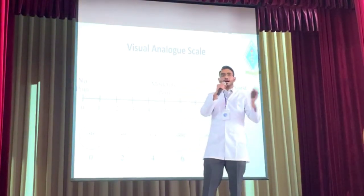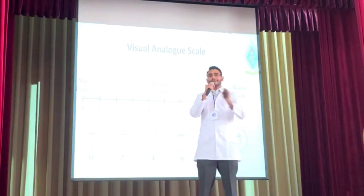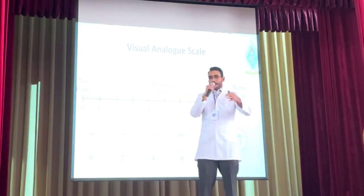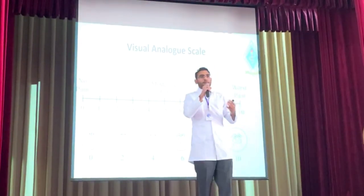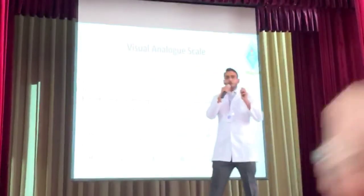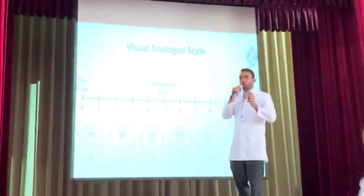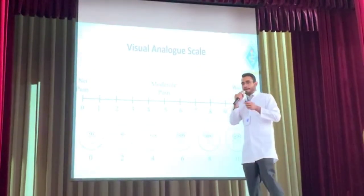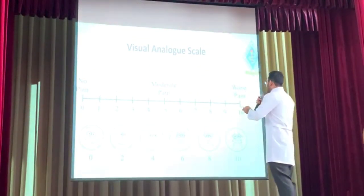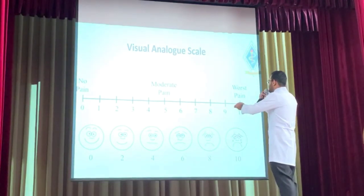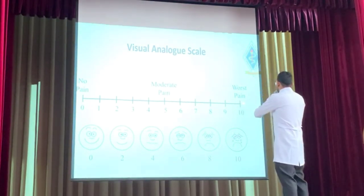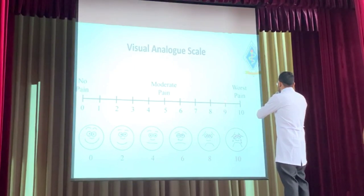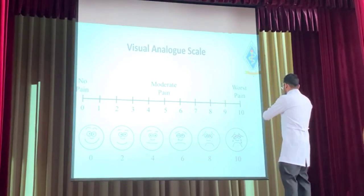Pain is a symptom — we cannot directly observe it. We use the visual analog scale to assess pain. On the visual analog scale, one end represents no pain and the other end represents severe pain. Our patient scored 9, so she was suffering with severe pain.